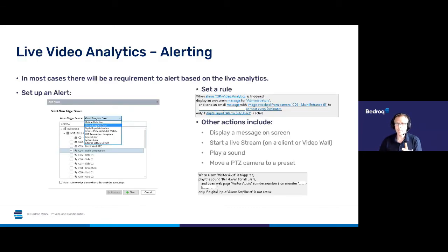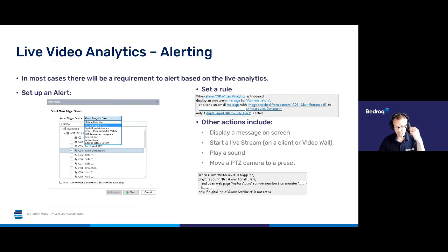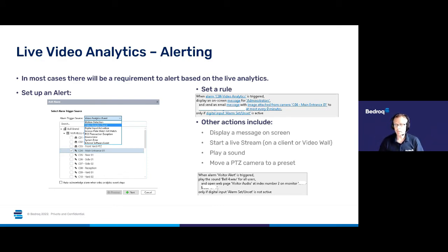Alert options include displaying a message on screens, starting live streams — useful when you have multiple jobs on and one alarm screen that pops up whatever is happening — playing a sound to wake an operator up, and moving a PTZ camera. For example, if you have a wide-view static camera and a PTZ in the same area, when an alert triggers on the static camera you can make the PTZ automatically move and zoom in on a door to give a better close-up view.